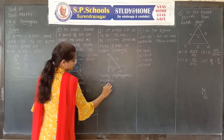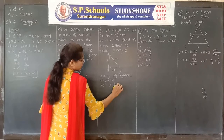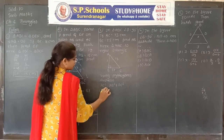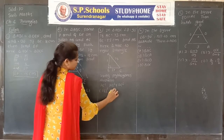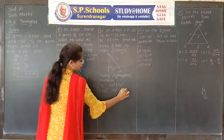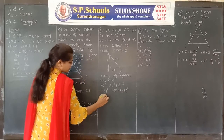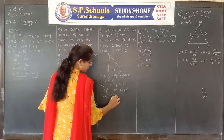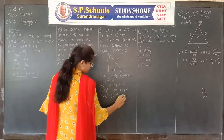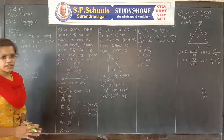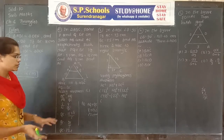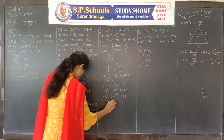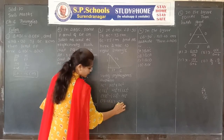Using the Pythagoras theorem: AC² = AB² + BC². Substituting: 73² = AB² + 55². Shifting 55² to the left side: 73² − 55² = AB². Using the identity a² − b² = (a − b)(a + b): (73 − 55)(73 + 55) = AB².